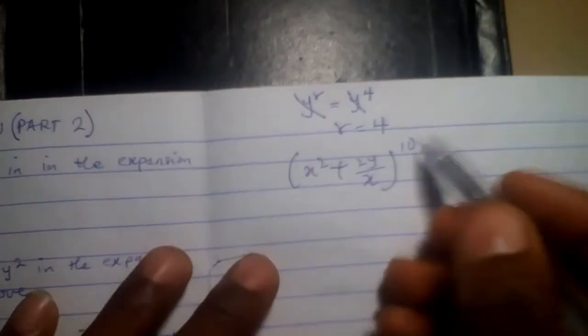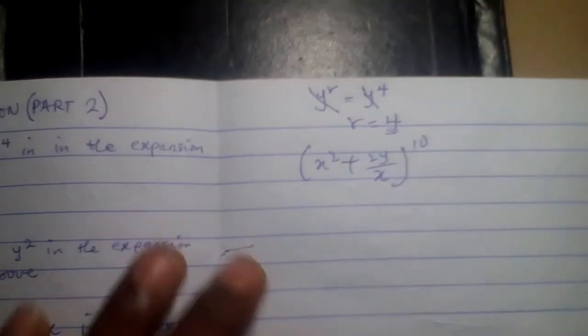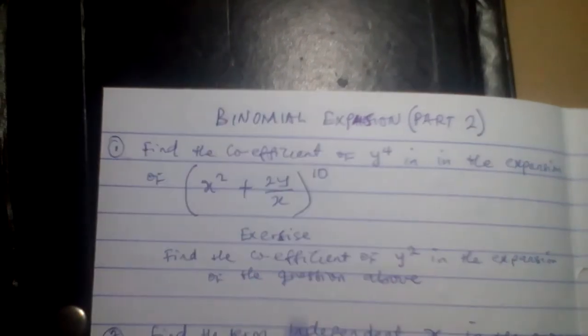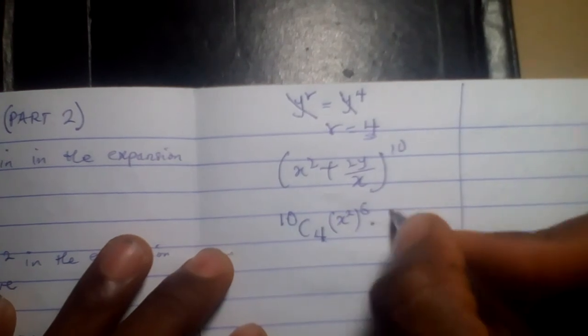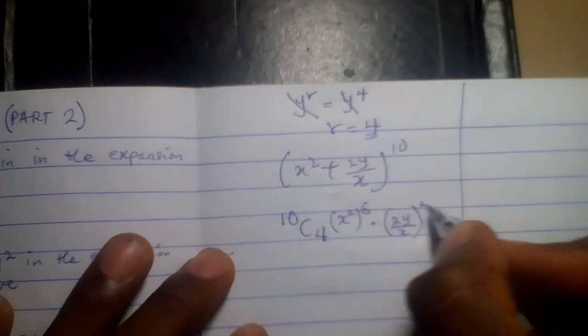So what this tells me is that if I expand at point r equals 4, I will definitely get a term that has the coefficient of y raised to power 4. So let's see how it goes. I will copy this: x squared plus 2y over x, all raised to the power 10. So I will start with 10C4, since from all indication, when r is 4, I will get a term that has the coefficient of y raised to power 4.